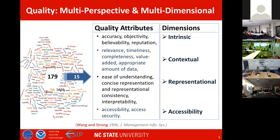From these 179 attributes, Wang and Strong selected 15 based on the importance of quality to data consumers, and they categorized them into four dimensions: intrinsic, contextual, representational, and accessibility.